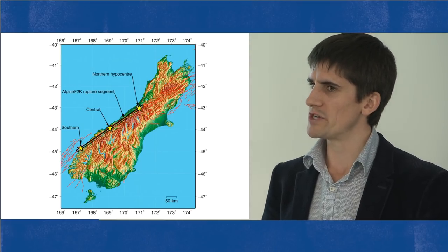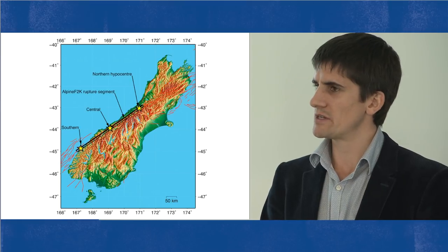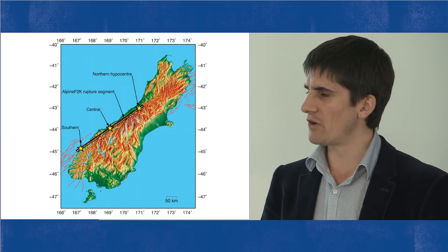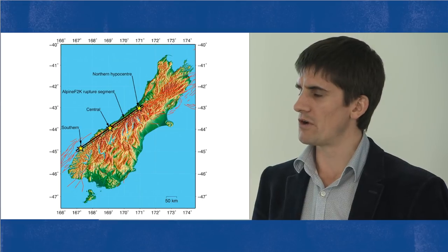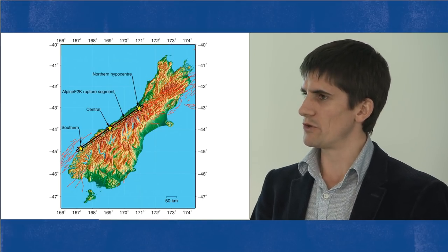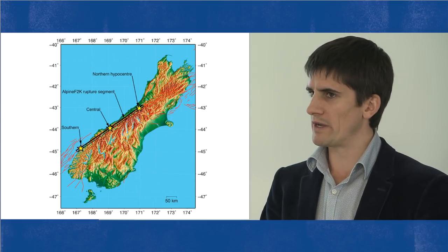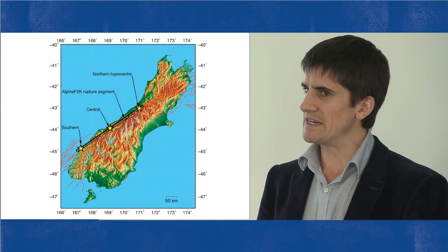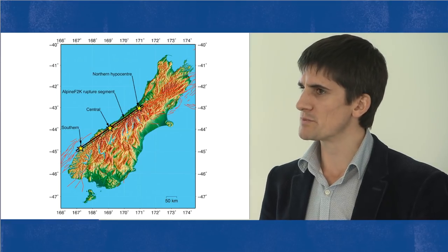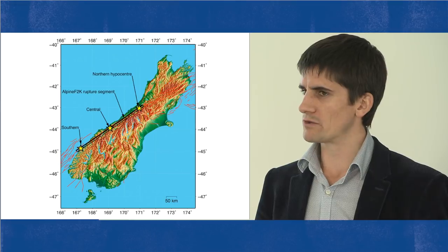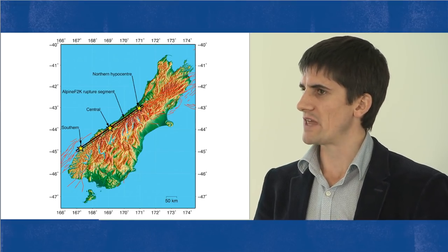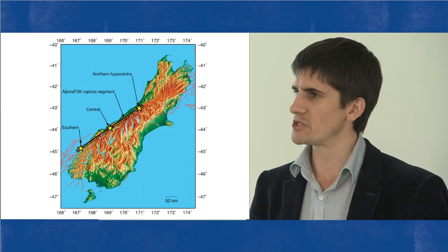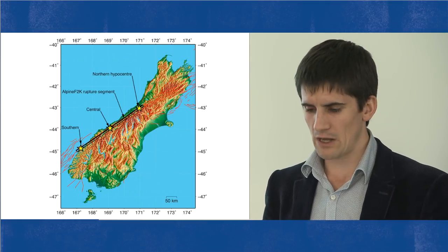When an earthquake starts it begins by rock in the fault failing at one particular point. This Alpine Fault modelling involves a 400-kilometre-long fault — not all 400 kilometres breaks in one instant. It starts at an individual point and slowly gets bigger over time. The rupture moves at about 3 kilometres per second, meaning it requires a little over a hundred seconds to rupture 400 kilometres. So the whole fault doesn't break in a single instant, and the ground shaking takes time to evolve as the earthquake slowly ruptures along its length.